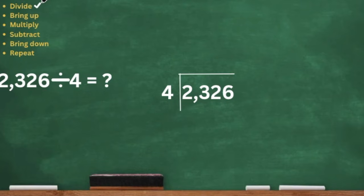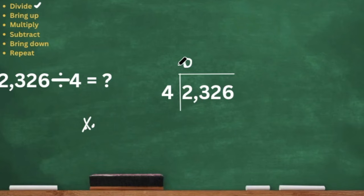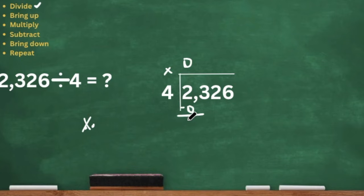So we will divide first, because that is the first bullet of our CFS. Our divisor is 4 and the first digit of our dividend is 2. I'm going to do 2 dots — how many groups of 4 can we get out of there? None. So that's zero. We bring a zero up, multiply zero times 4, which is zero. We subtract: 2 minus 0 is 2. Now we bring down that 3.